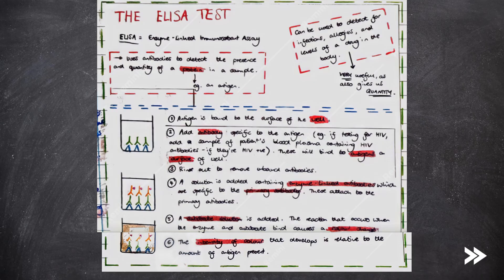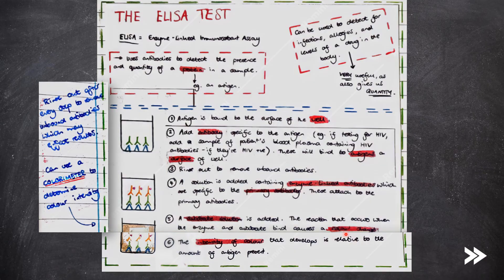In the ELISA test, an antigen is bound to the surface of the well. The antibody specific to the antigen we're testing for is added, which will bind to the antigens if they're present. The special thing about these antibodies is that they're enzyme-linked, i.e. they have an enzyme attached. Next, we rinse out the well to remove any unbound antibodies which may lead to any false positives.